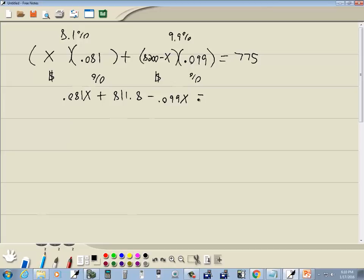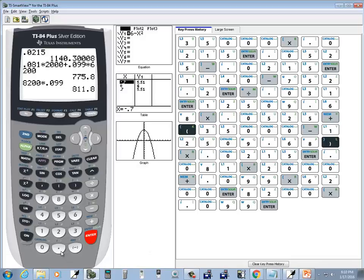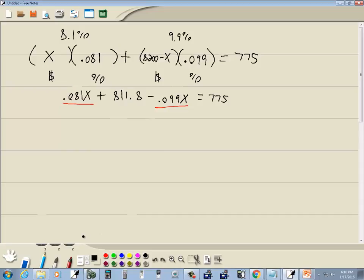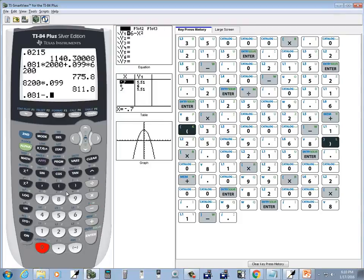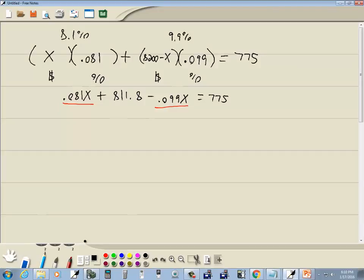Too many decimals are running together in my head. Okay. Combine together like terms. So combine these two together. So I've got 0.081 minus 0.099. And that gives this. Negative 0.018X plus 811.8 equals 775.